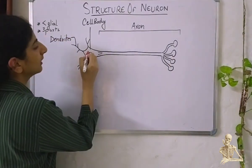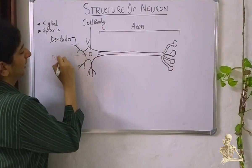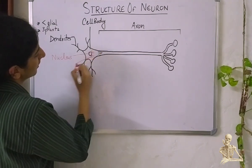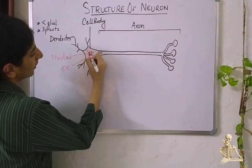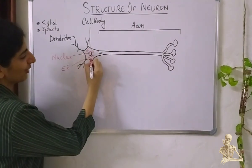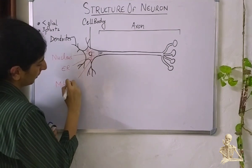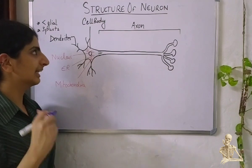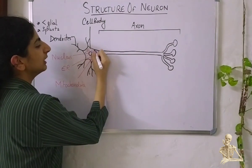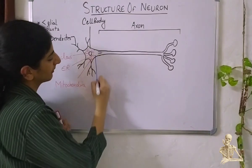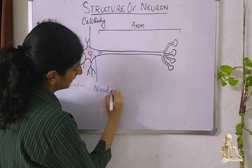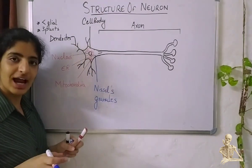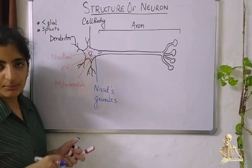Inside the cell body of this neuron there will be some important organelles present, like firstly the nucleus, some endoplasmic reticulum, the powerhouses of the cell — mitochondria. Other than these organelles, there are some specific structures seen in the neuron. First, you will observe some granules scattered in the cytoplasm. These granules are known as Nissl's granules, and they are essentially ribosomes, some debris of fats and lipids, or proteins present in the cytoplasm.